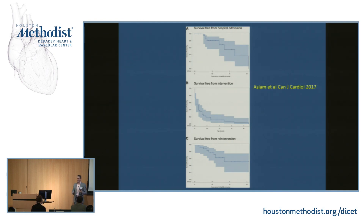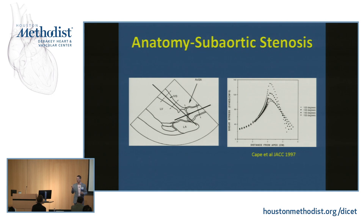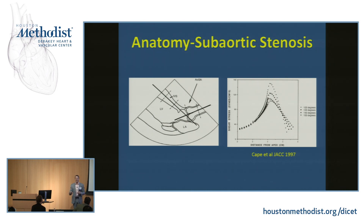Starting with subvalvular aortic stenosis: this paper from Boston demonstrates that subvalvular aortic stenosis results not only from whatever genetic factors are responsible for Shone complex, but also from shear forces along the angle between the interventricular septum and the aorta. Even after you've resected that membrane, those shear forces remain. The angle between the aorta and the interventricular septum is unlikely to change substantially throughout life, so there is a continued pathological stimulus to the area where you've previously resected the membrane, and the membrane has a tendency to recur if not resected extensively.